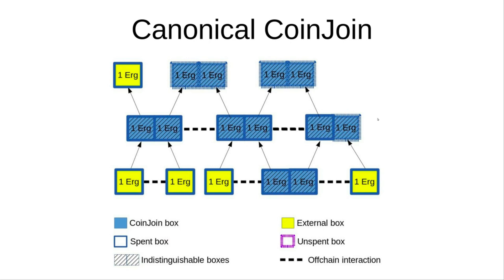One of the protocols ZeroJoin is based on is CoinJoin. CoinJoin is a protocol developed for Bitcoin but it is very generic — it basically just requires the blockchain to be UTXO based. I will be using ERG as the currency of the Ergo blockchain for all my examples. In CoinJoin, a box is equivalent to a UTXO, and I will use the terms interchangeably. This diagram shows boxes of one ERG each in a CoinJoin transaction. The two inputs have a dotted line indicating the owners must interact off-chain and jointly form and broadcast the transaction.